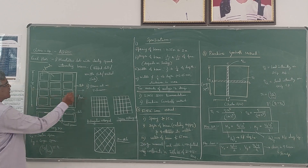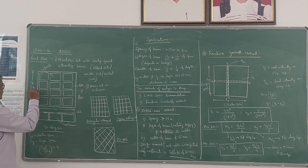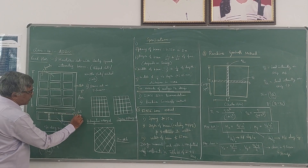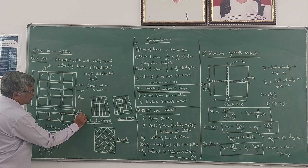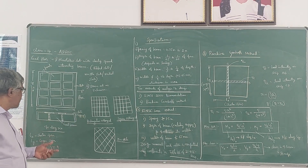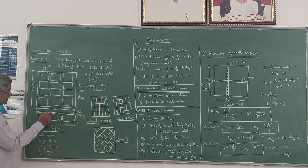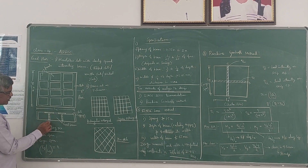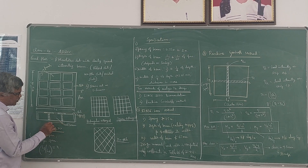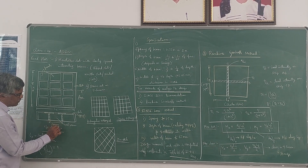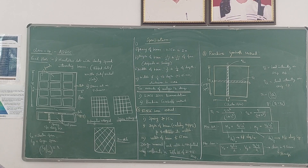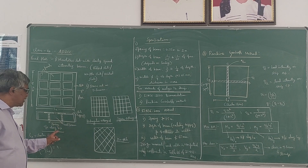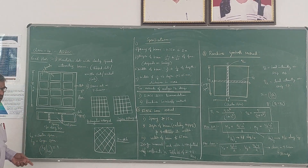If you take section XX, it looks like this. It consists of a slab portion at the top, which is called the topping. The thickness of the slab is the topping, and a portion of this slab acts as a beam. In between, we are going to provide the beams with a certain spacing. Those beams will act as T-beams because they are constructed monolithically — both the slab and beams are constructed monolithically.